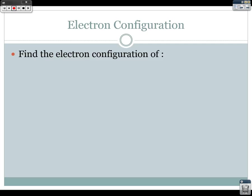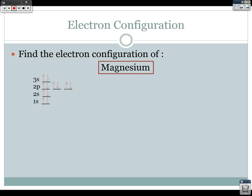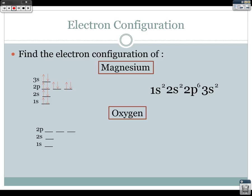Let's do an example. Magnesium has an atomic number of 12, meaning 12 protons and 12 electrons. Filling them in: 2 in 1s, 2 in 2s, 6 in 2p, and 2 in 3s. So the electron configuration is 1s² 2s² 2p⁶ 3s². For oxygen, atomic number 8 gives 8 electrons: 2 in 1s, 2 in 2s, and 4 in 2p, giving the configuration 1s² 2s² 2p⁴.